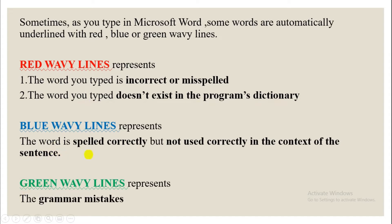Blue wavy lines represent that the word is spelled correctly but not used in the correct context of the sentence. Green wavy lines represent grammar mistakes. I will now show you these in a Microsoft Word document by writing a sentence.